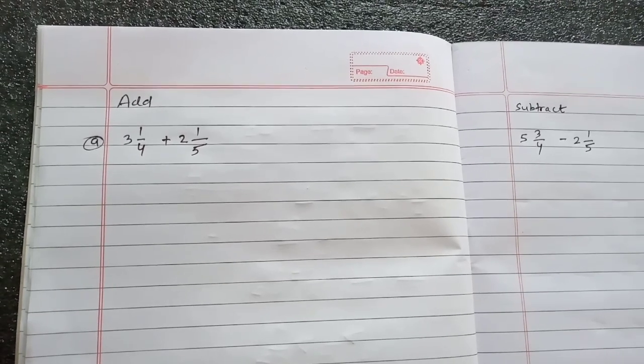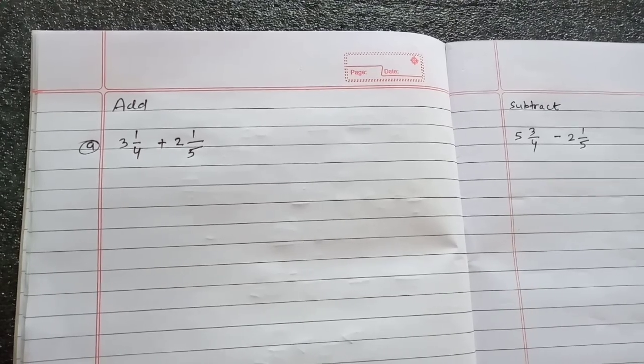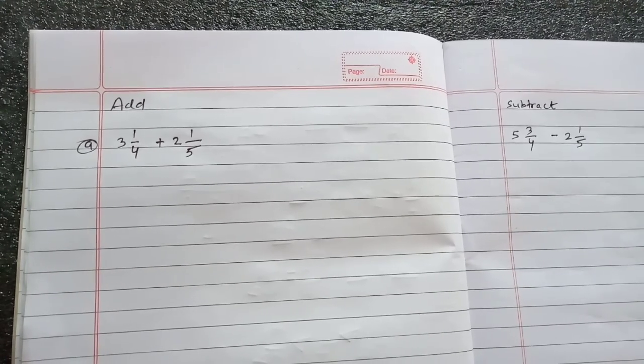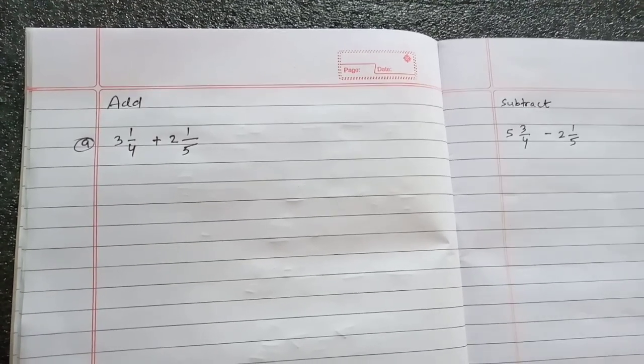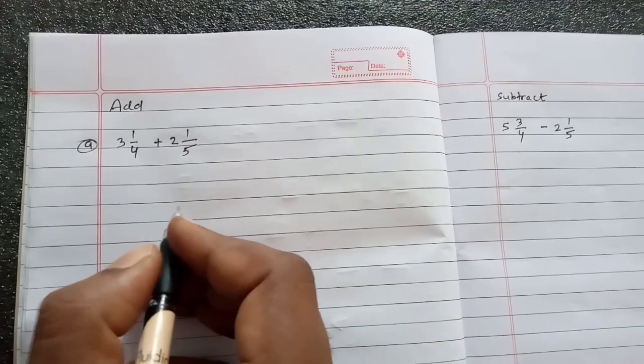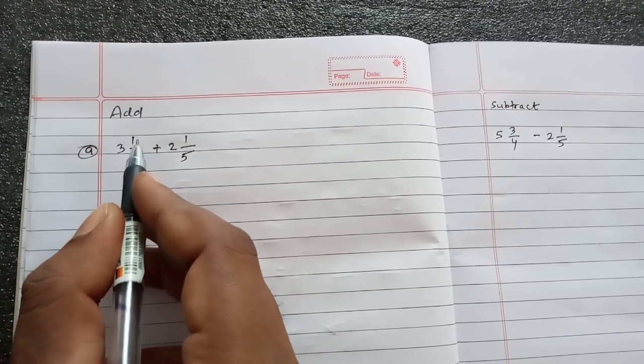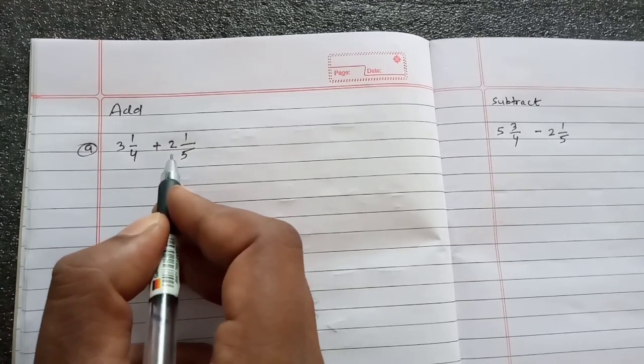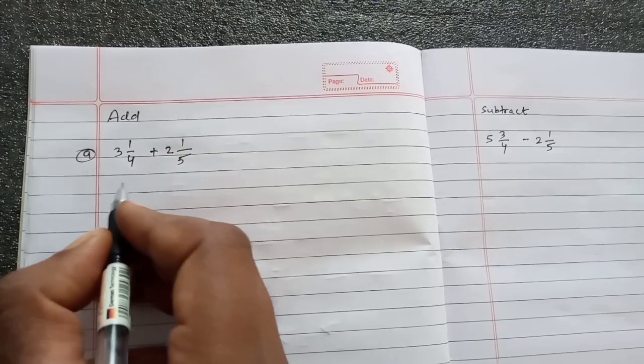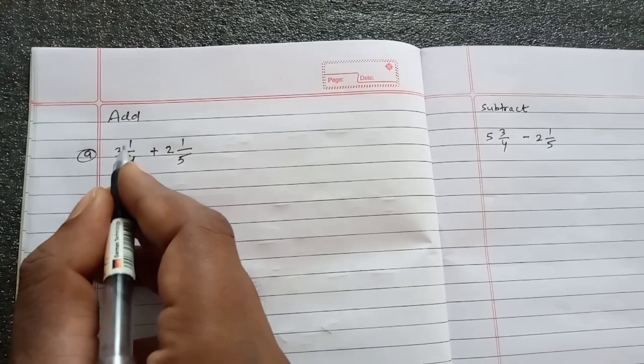Hello everyone, welcome to my channel Math Time with Saga Daya. Today I am back with another question. I am going to teach you how to add fractional numbers. So we have 3 1/4 plus 2 1/5. First of all, we can just change this mixed number into improper fraction.